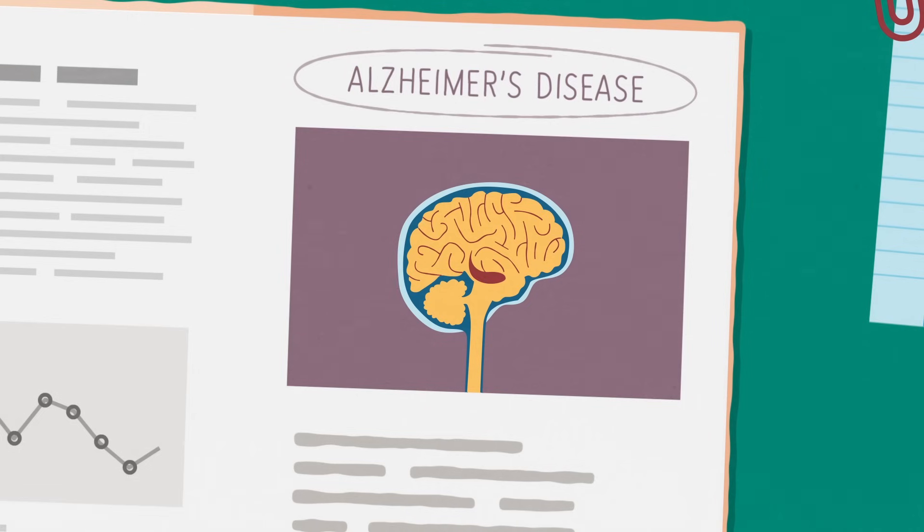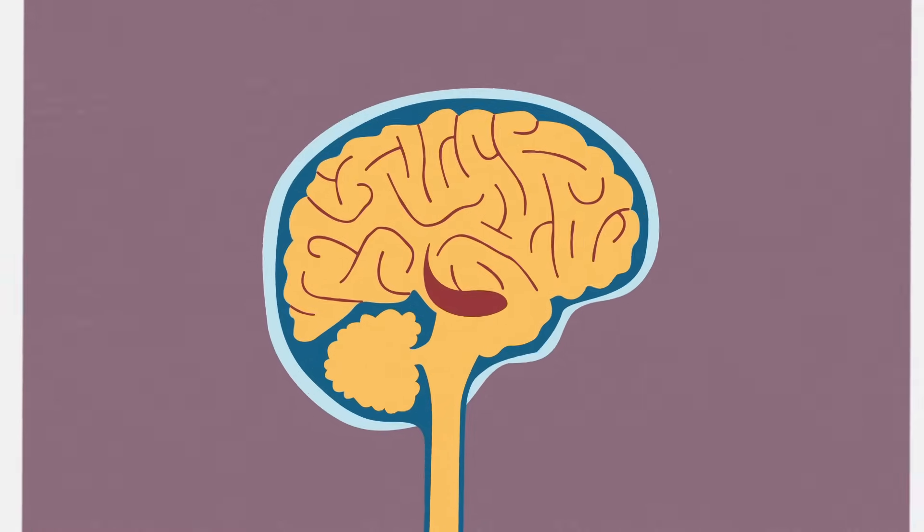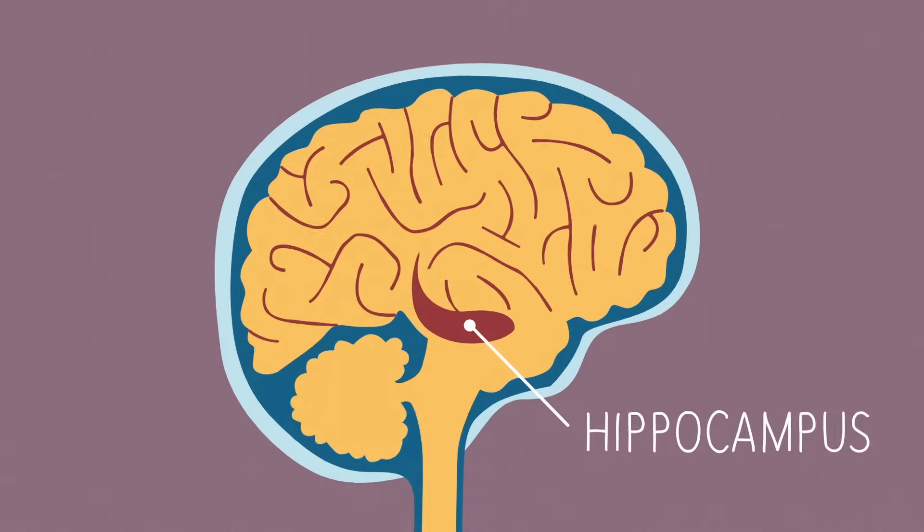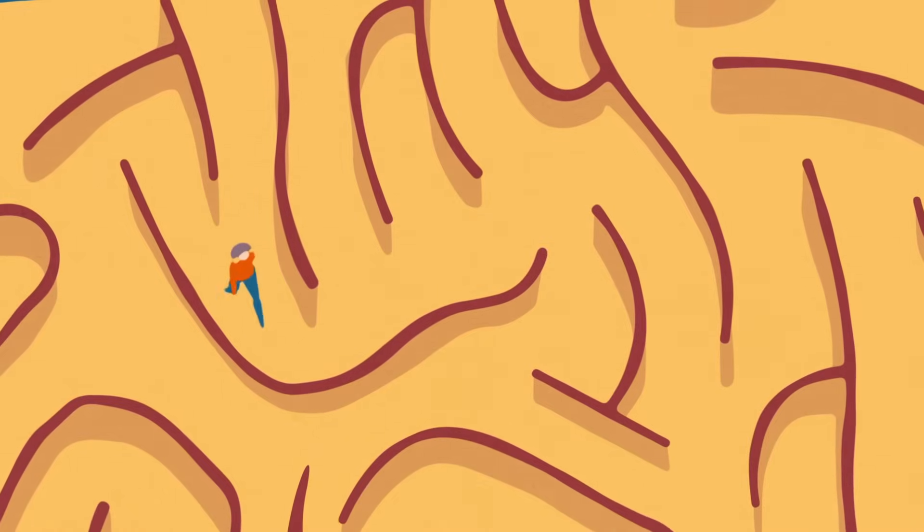Alzheimer's disease is the most common cause of dementia. Often one of the first areas of the brain to be affected by Alzheimer's is the hippocampus. The hippocampus controls aspects of our memory and navigation. So forgetfulness and getting lost are usually some of the first symptoms of Alzheimer's.